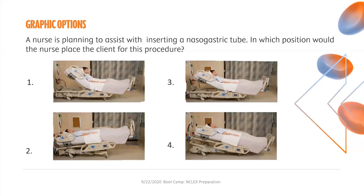Graphic option questions present graphic answer options instead of text — you would have pictures as options. As with all NCLEX questions, options are preceded by a circle and you click the circle for your answer. Example: a nurse is planning to insert a nasogastric tube. In which position would the nurse place the client? 86% chose the correct answer — option one, High Fowler's position. You would need to know the NG tube insertion procedure and then look at the graphic options to determine the correct client position.